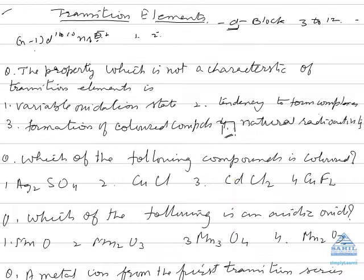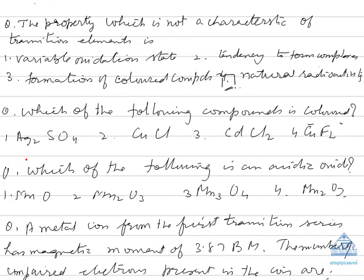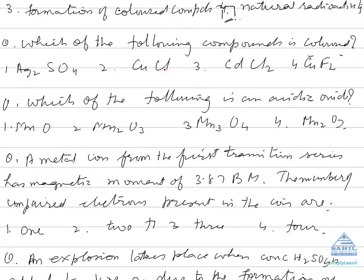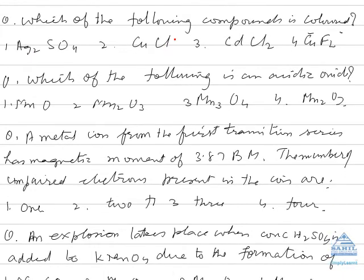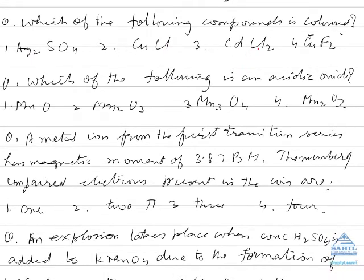Which of the following compounds is colored? Whichever contains unpaired electrons will be colored. Silver does not have any unpaired electrons, Cu+ does not have any, cadmium does not. Hence CuCl2. In Cu2+, the configuration is 3d9, there is one unpaired electron. This unpaired electron can be excited from one d orbital to another. So the answer is fourth.